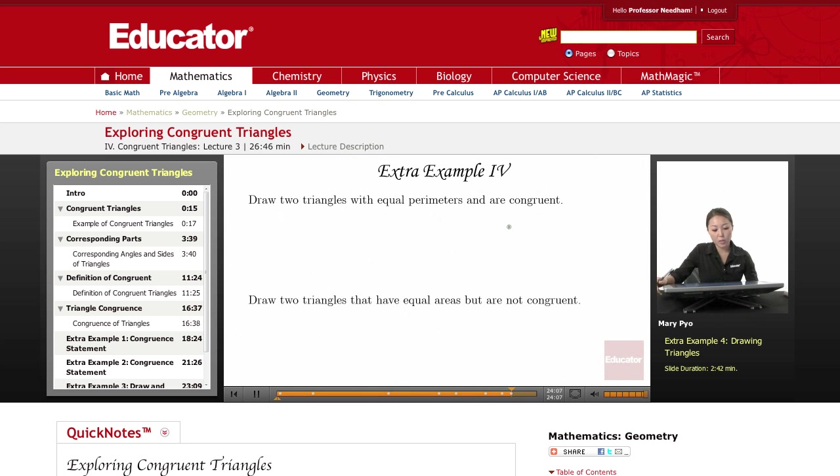Draw two triangles with equal perimeters that are congruent.